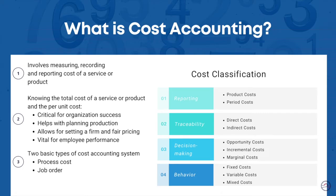For example, costs can be classified as direct and indirect to help with accurately tracking costs pertaining to a job. Similarly, they can be classified as opportunity, incremental, and marginal to help identify what's relevant and what's not. Finally, costs can be classified as fixed, variable, or mixed to understand the relationship between cost, volume, and profit.